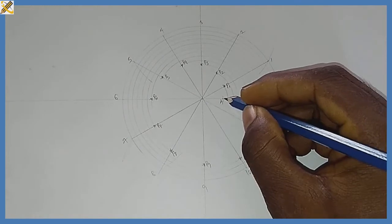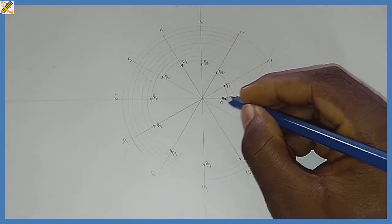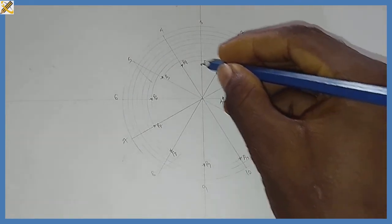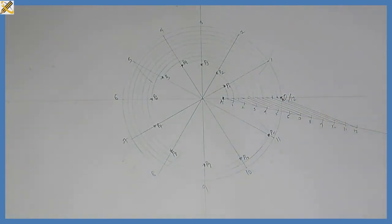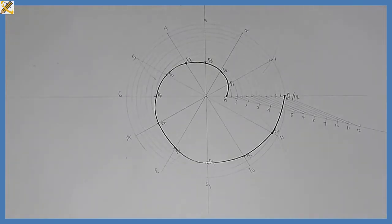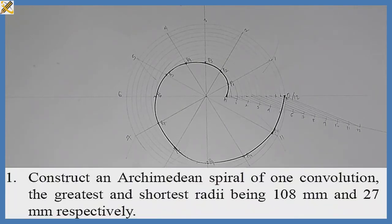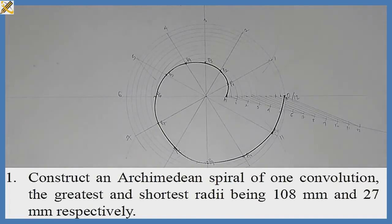The next procedure is to pick my French curve, starting from mark A which is point zero, and join all the points together — tracing them out with my French curve or flexible curve. That is the trace of the Archimedean spiral of one convolution. Remember the scale used here is a reduced scale of 1:2, meaning all dimensions were divided by two. Please subscribe to this YouTube channel and refer it to friends who might need it. Thank you.